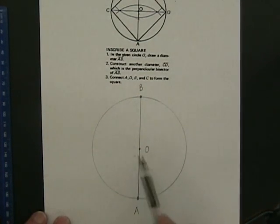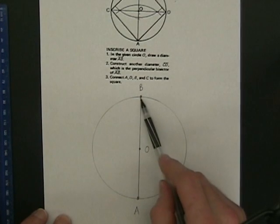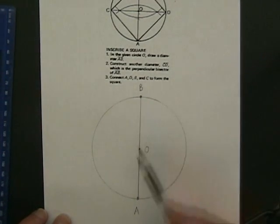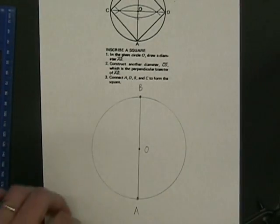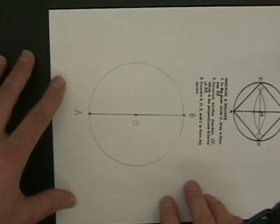Now, to figure out the other two points to make up the square, we're going to bisect AB. We're going to find the perpendicular bisector of segment AB. I'm going to turn my paper sideways to do that.